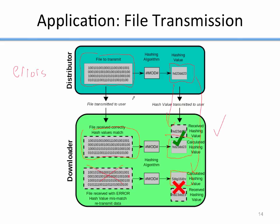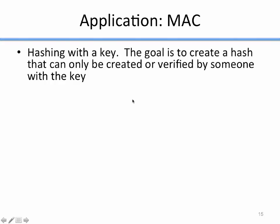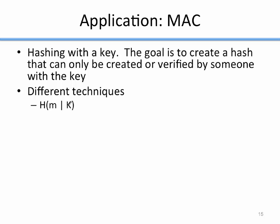What if we want a hash that incorporates a secret key so an attacker can't produce it? That's called a message authentication code — hashing with a key. The goal is to create a hash that can only be created or verified by someone who knows the secret key. The obvious approach is to append the key at the end before computing the digest. That works, but it's problematic due to how some hash functions are designed — it makes an attacker's job a little bit easier.